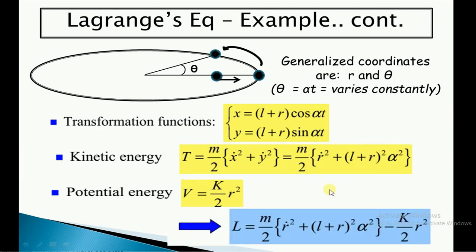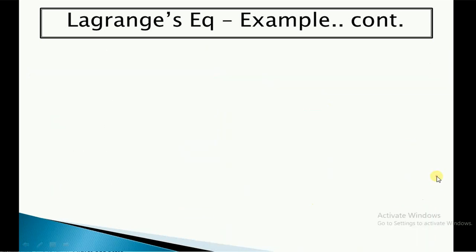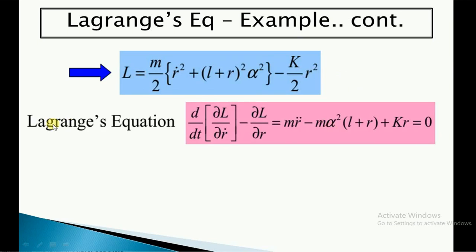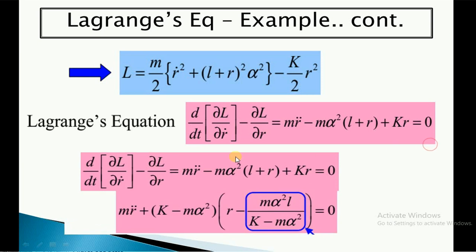The Lagrangian is L = (m/2)(r-dot² + (l+r)²·α²) − (k/2)r². Applying Lagrange's equation of motion — d/dt(∂L/∂r-dot) − ∂L/∂r = 0 — we get: m·r-double-dot − m·α²·(l+r) + k·r = 0. Rearranging: m·r-double-dot + (k − m·α²)·r − m·α²·l·(k − m·α²)⁻¹·(k − m·α²) = 0, which simplifies to m·r-double-dot + (k − m·α²)r − m·α²·l = 0.